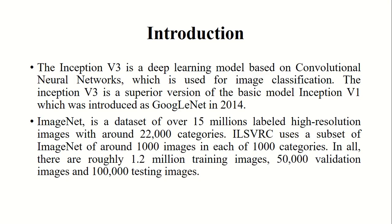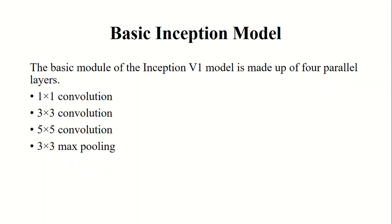Inception V3 is a deep learning model built on convolutional networks, mainly used for image classification. There are three versions: V1, V2, and V3, with V3 being the superior version. The inception model was initially introduced in 2014 by Google and was called GoogLeNet. It was built on the ImageNet dataset, which has around 15 million labeled images and 22,000 categories. The model used a subset of ImageNet with 1,000 classes, roughly 1.2 million training images, validated with 50,000 images and tested with 100,000 images.